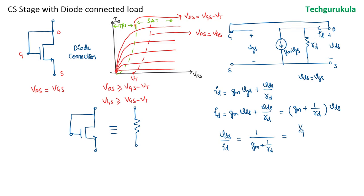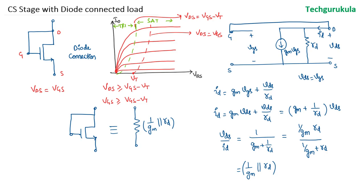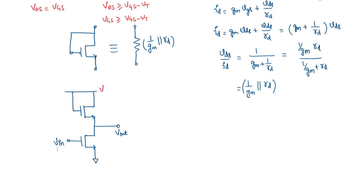This can be written as 1 over GM in parallel with RD. This will be the small signal resistance that the diode-connected load would offer, that is 1 over GM in parallel with small RD. A simple way to remember is that 1 over GM has units of ohms and small RD also has ohms. Now let us use this diode-connected MOSFET as load for the common source amplifier instead of the capital RD resistance from the previous video. This is how the circuit is, where M2 is the transistor connected in diode fashion and M1 is the main amplifying MOSFET.